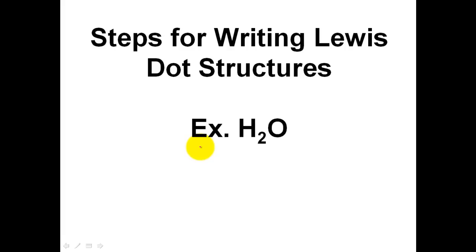Hey guys, it's Mr. Post, and on today's video we'll be drawing Lewis dot structures for covalent compounds. We're first going to jump into it by going over the steps that you need in order to draw them. This is a little different than ionic compounds, so a few steps are necessary to ensure we draw our Lewis dot structures correctly. The first example we're going to use is water, H2O.